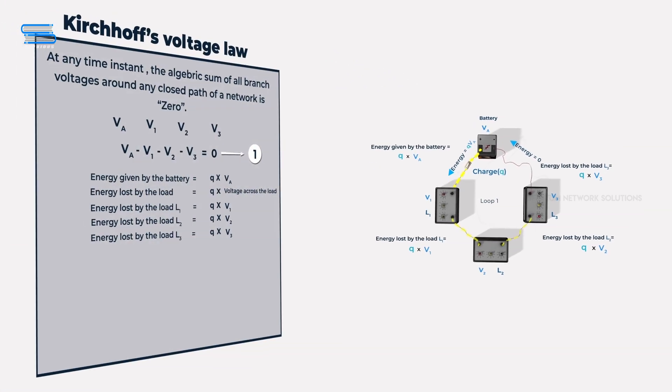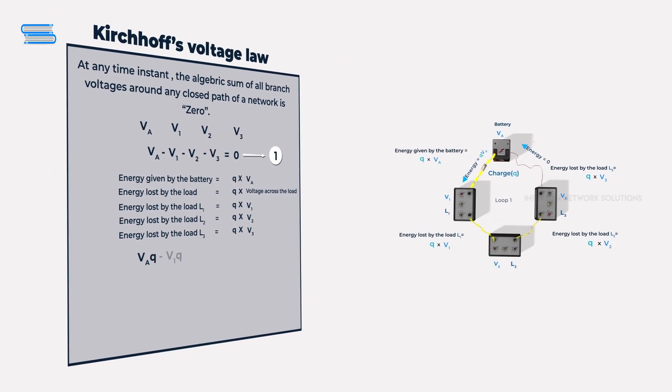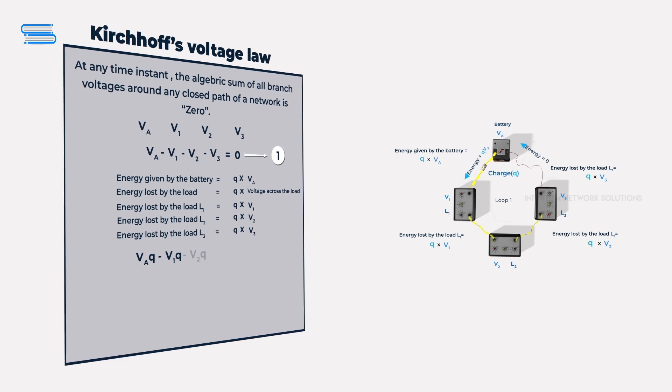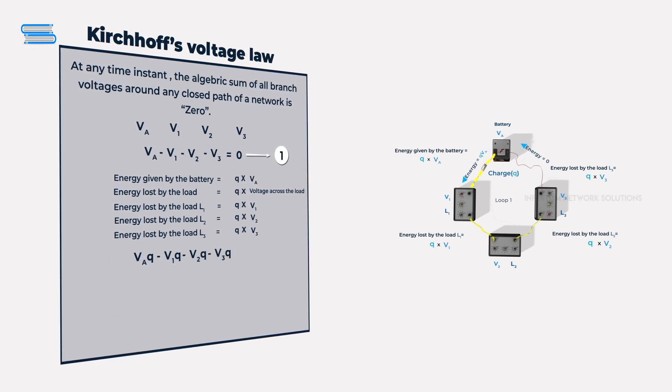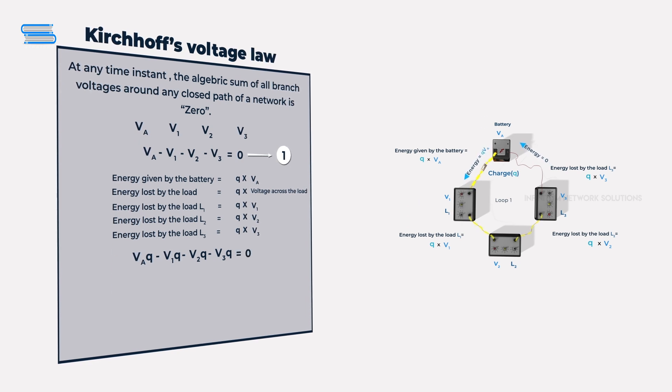To put this in a mathematical equation, we have VA times Q minus V1 times Q minus V2 times Q minus V3 times Q is equal to zero.